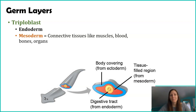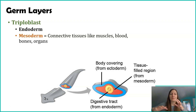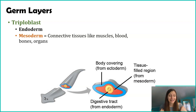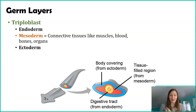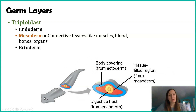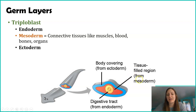The mesoderm is essentially giving rise to everything in your body — connective tissues particularly. Connective tissues include things like muscles, blood, bones, organs, and just general connective tissue. It's pretty much giving rise to not your skin, not your nervous system, and not the internal linings of your organs — so pretty much everything else. And then similarly to our diploblasts, we also have an ectoderm: that outermost layer that is going to develop into the outer epithelial cells.